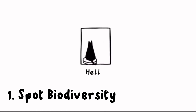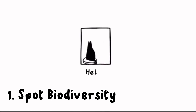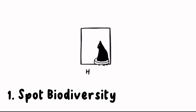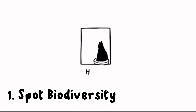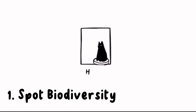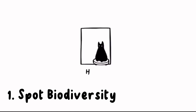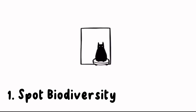One key aspect of biodiversity is species diversity. Different species play unique roles in ecosystems, contributing to their functionality and resilience. A diverse range of species ensures that ecosystems can adapt to environmental changes, making them more robust and sustainable.